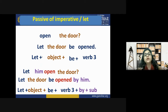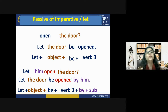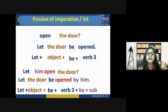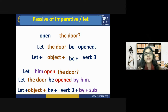For imperative sentences, we use 'let' in the passive. 'Open the door' → 'Let the door be opened.' 'Let him open the door' → 'Let the door be opened by him.' Structure: let + object + be + verb third form + by + subject. 'Let' is essential in converting imperative active sentences into passive voice.